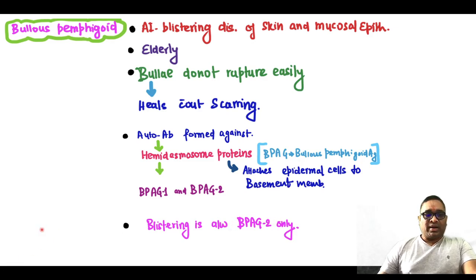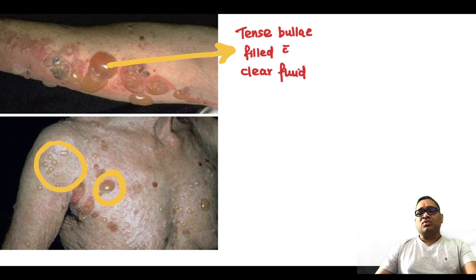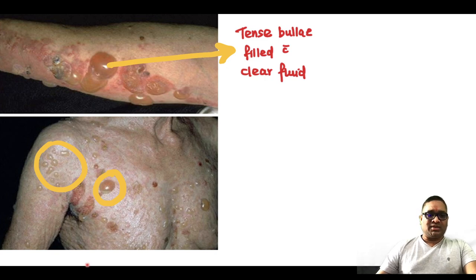In a clinical case of bullous pemphigoid, you are going to find a tense bulla filled with clear fluid, and the epithelium will be intact. As you can see, their epithelium is intact.